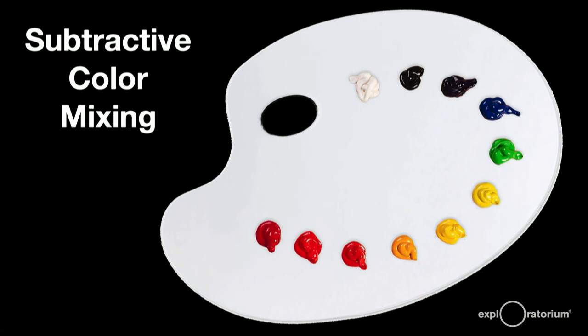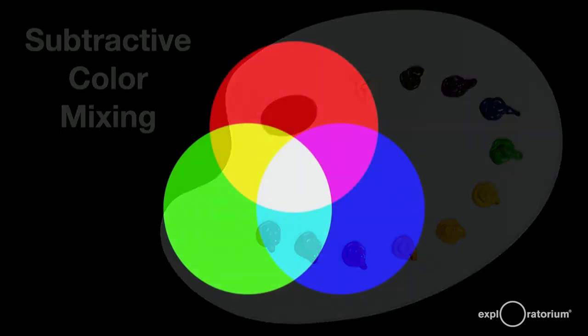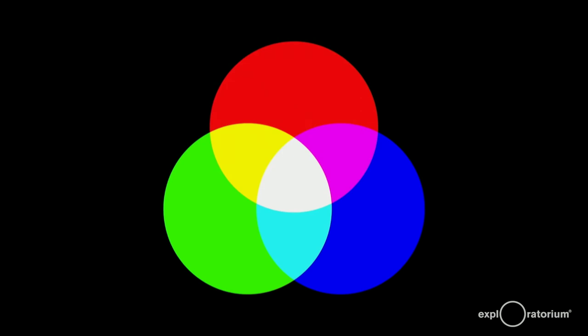Now let's talk about subtractive color mixing. Paint is an example of subtractive mixing. You start with a white canvas or palette like you see here. All colors are reflecting from the surface. Add paint of a certain color, and only that color reflects from the canvas. You had to subtract something from the white to get the color.